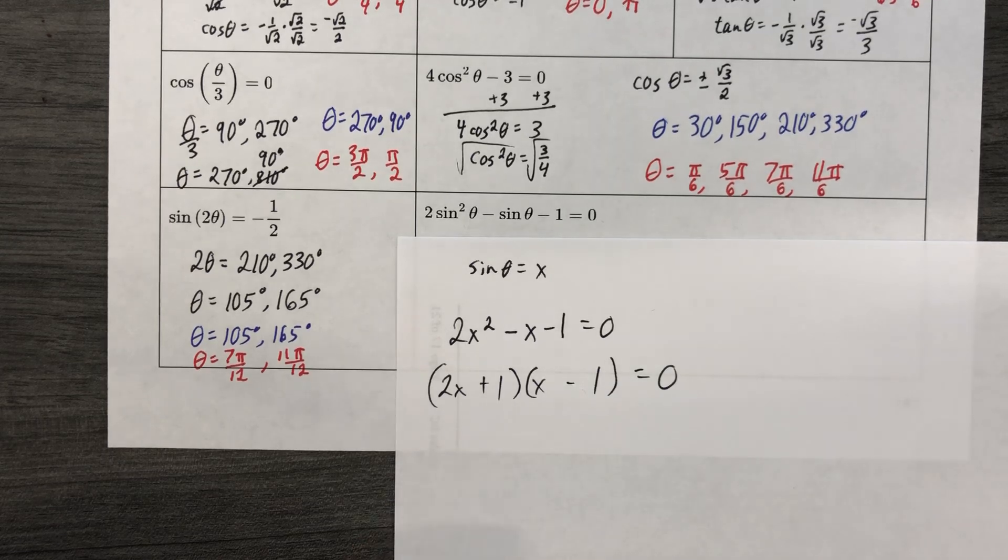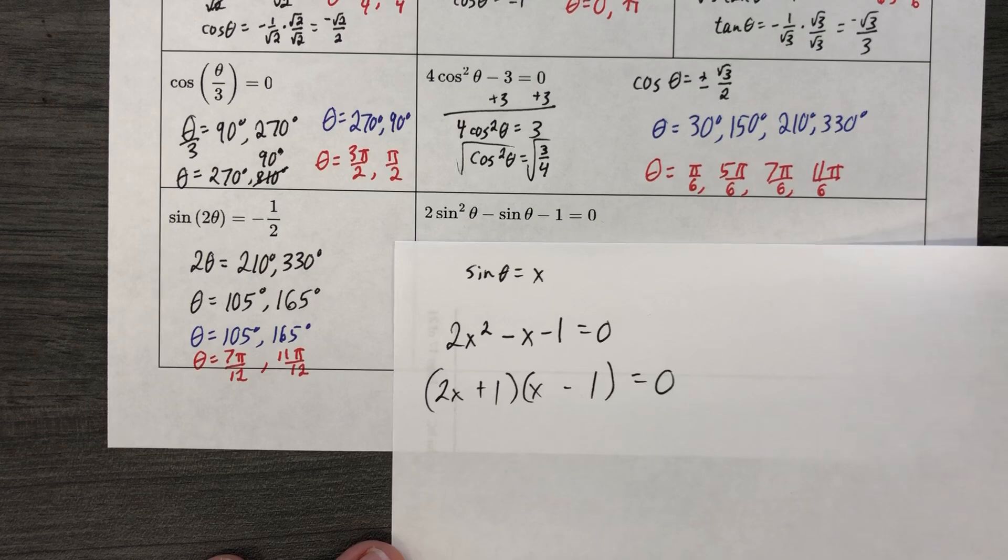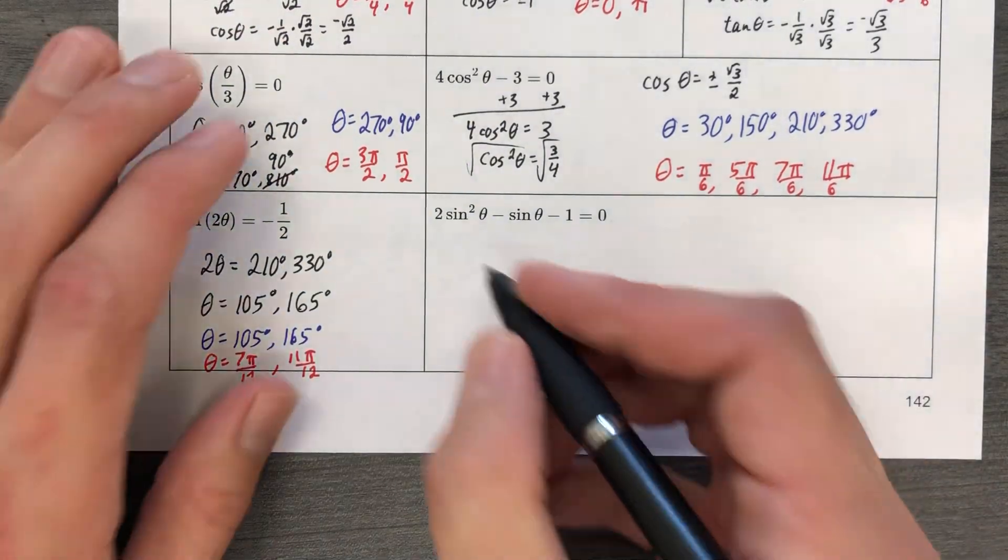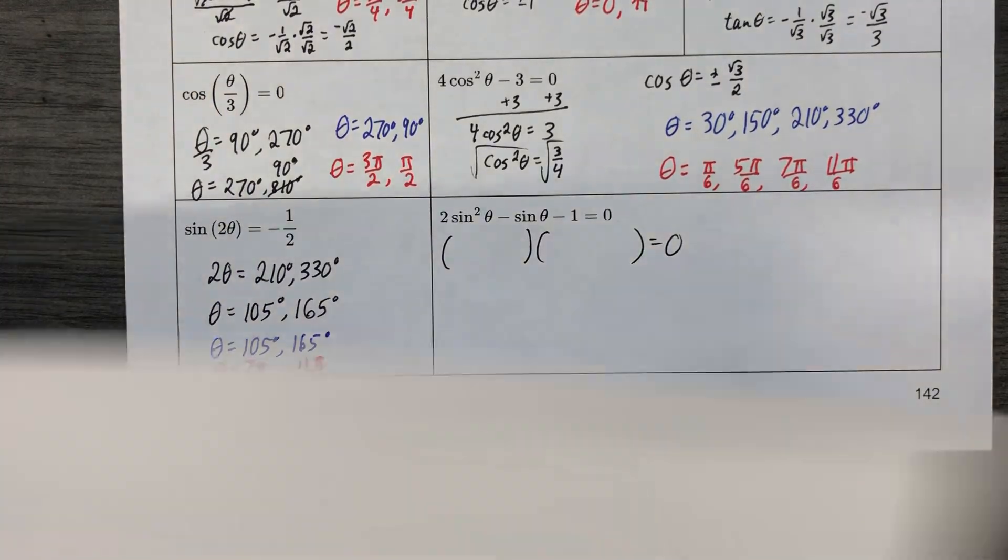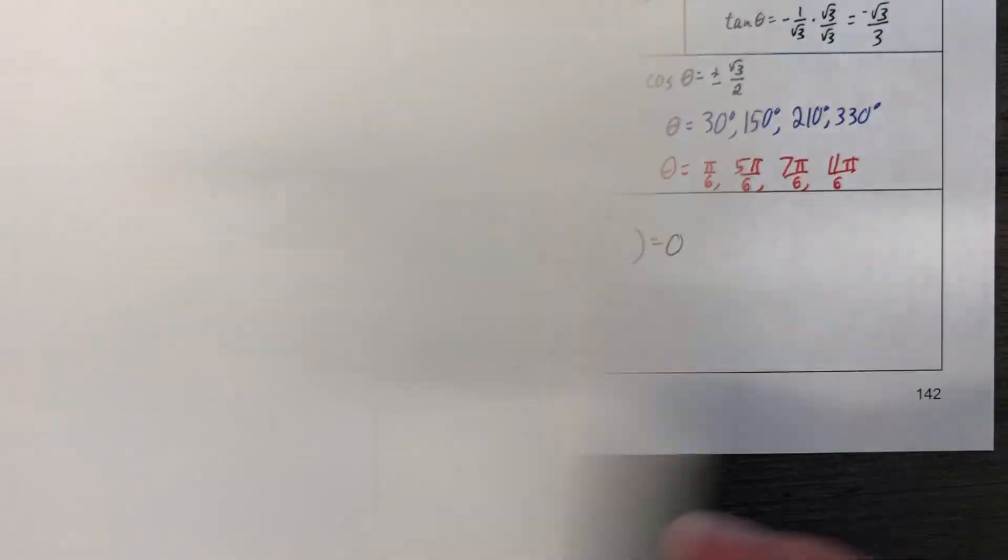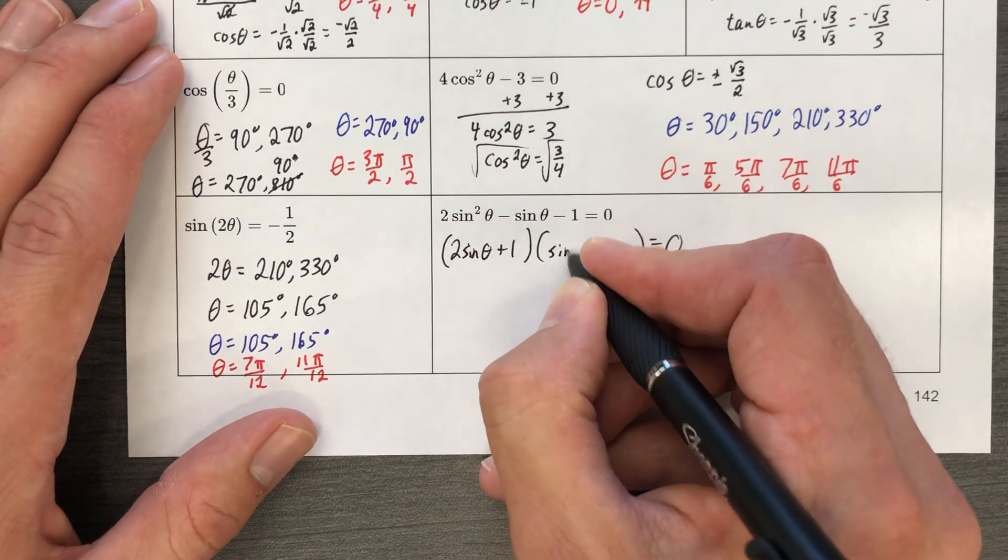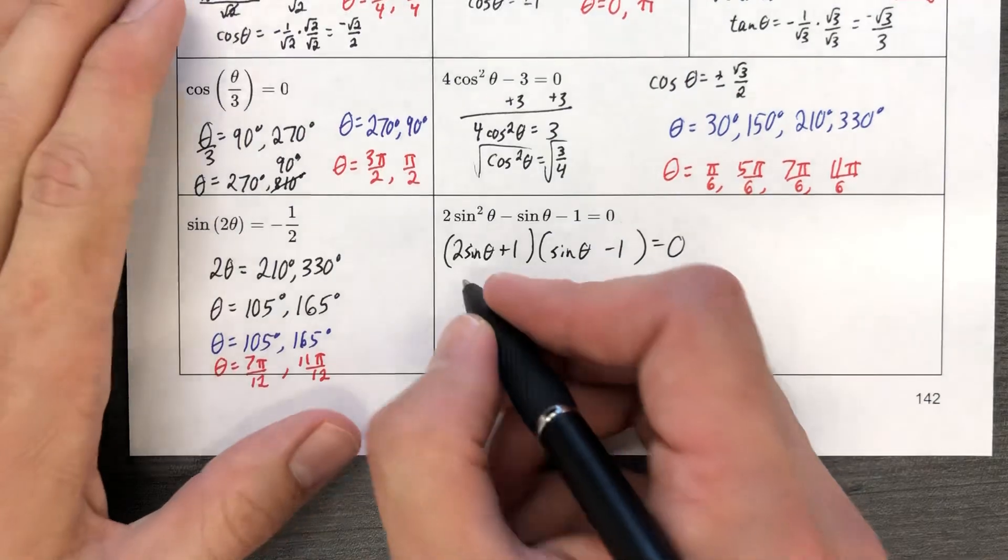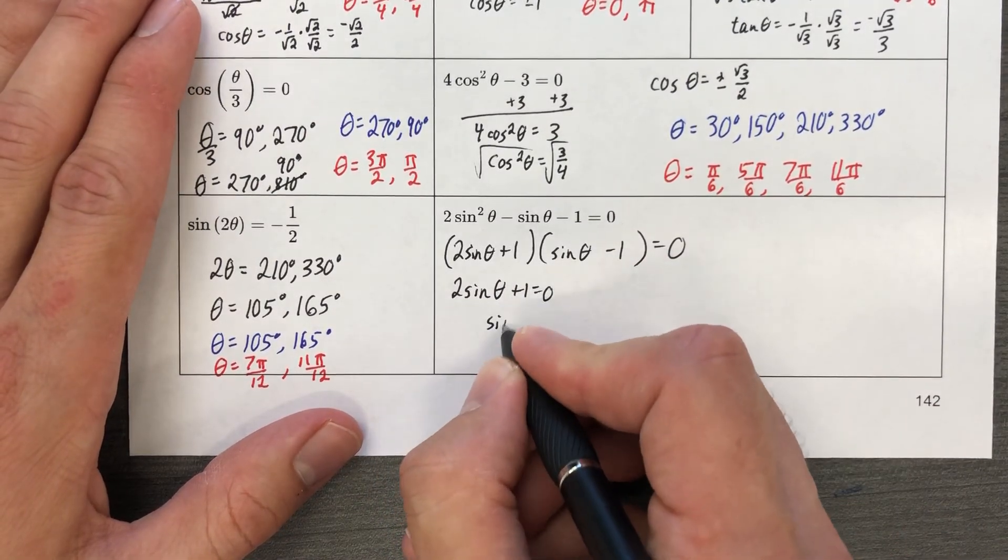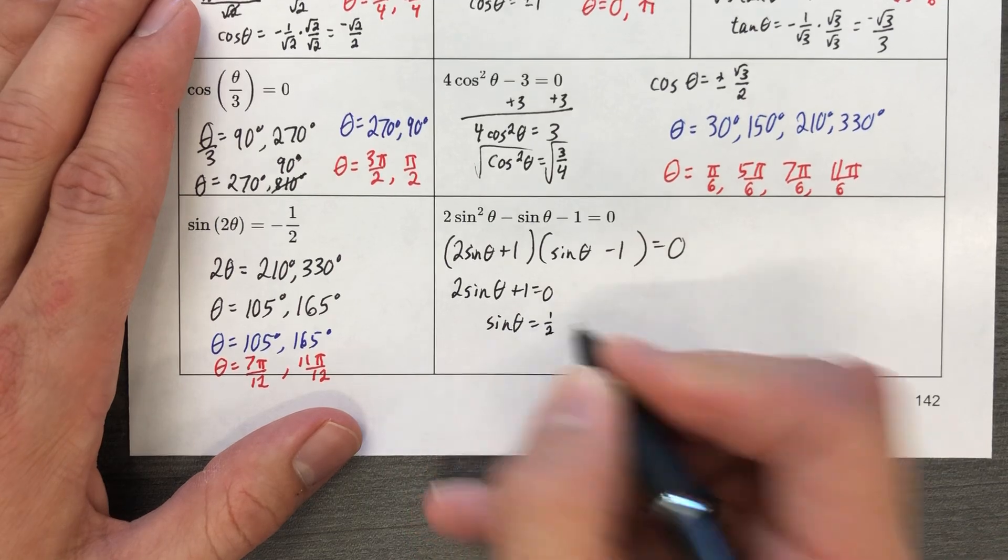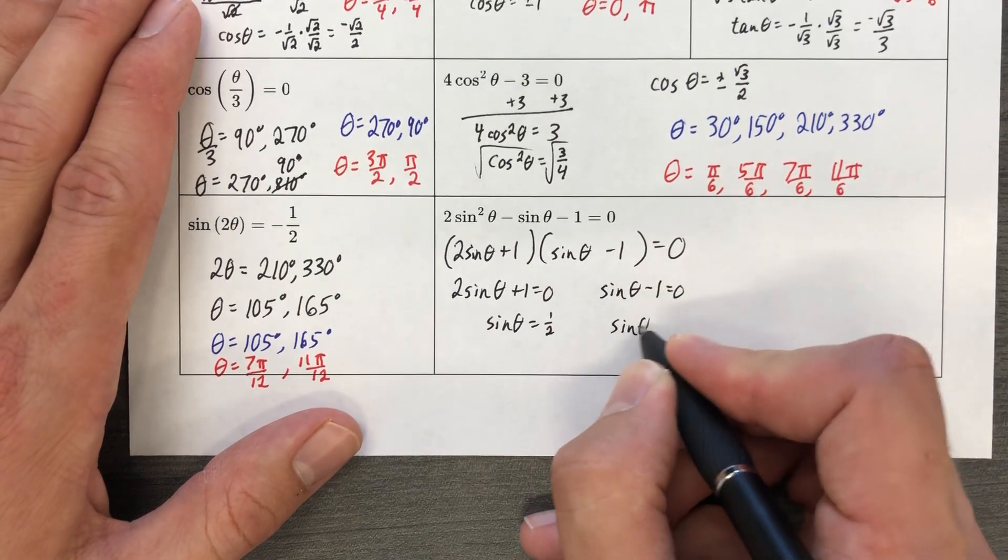Everything that you just wrote, we're going to do the same thing with sine now. We're not going to write that because that just defined our variable for our doodling. But let's take that, run with it. So 2x plus 1, x minus 1. 2 sine theta plus 1, sin theta minus 1 equals 0. So 2 sine theta plus 1 equals 0. So sine theta equals negative 1 half. And sine theta minus 1 equals 0. So sine theta equals 1.